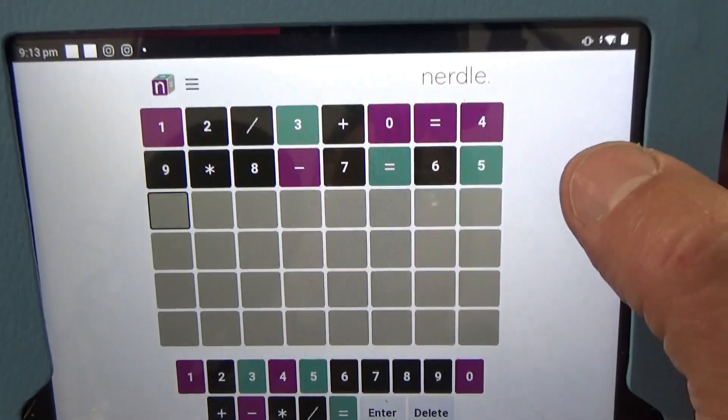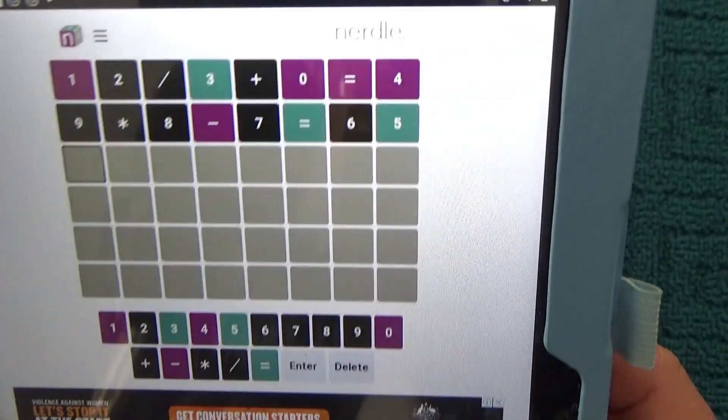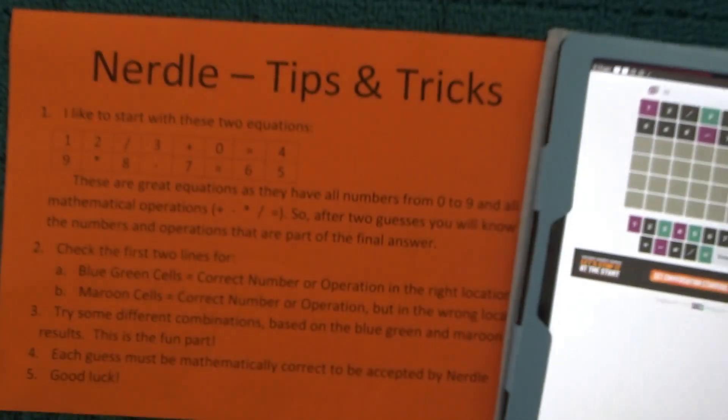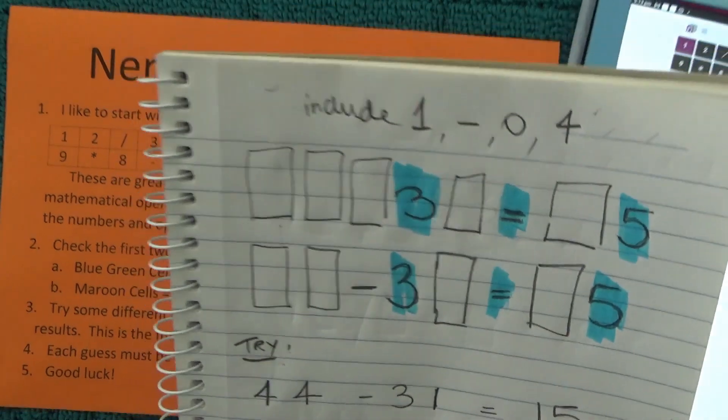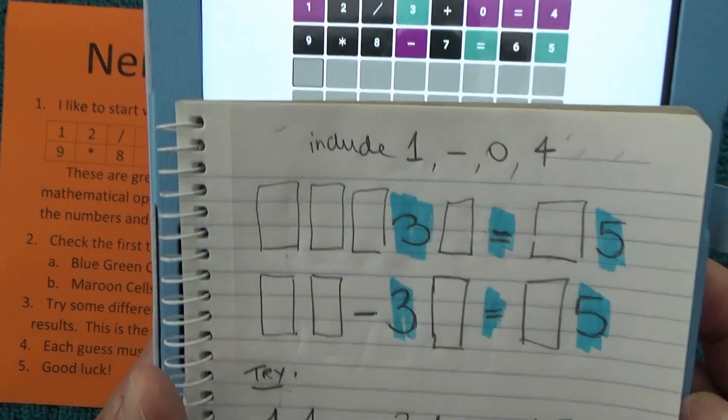you know by looking at the blue and the maroon cells, you'll know all the numbers and operations that are part of the final answer by using those first two equations. So I reckon those two equations are the best way to start Nerdle.